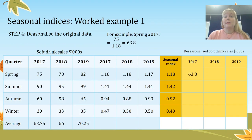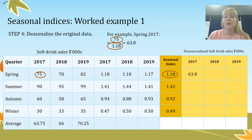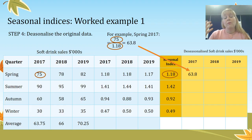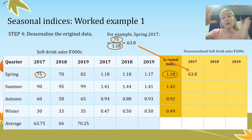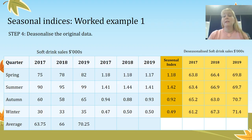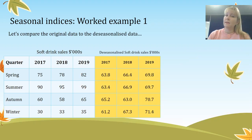Now we're ready for step four: de-seasonalise the original data. We divide each original data point by its corresponding seasonal index. So the $75,000 of sales in spring is brought down to $63,800. The reason it's brought down is because spring is quite high for soft drink sales, so we're making all the data roughly the same level by taking out the seasonal impact. You can see they're now all in the 60 to 70 range with no big spikes — we've de-seasonalised the data.